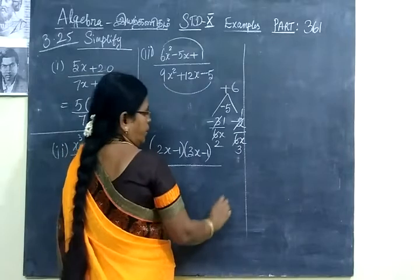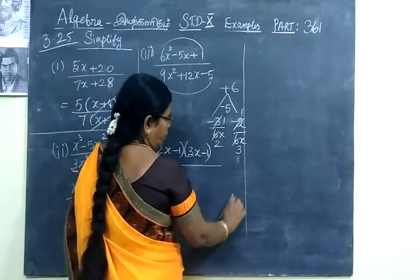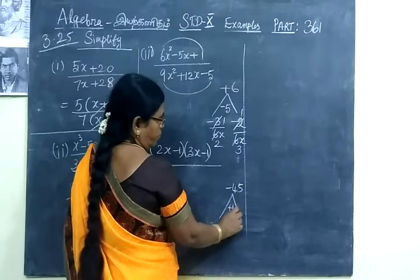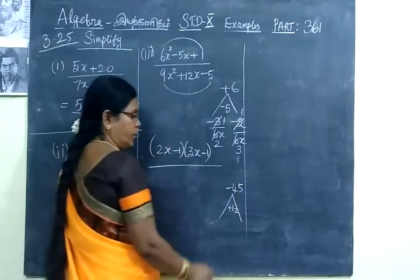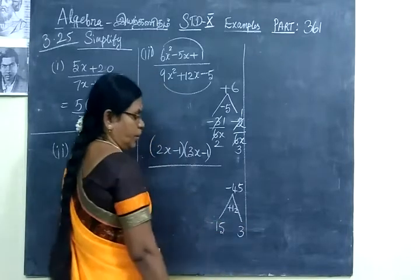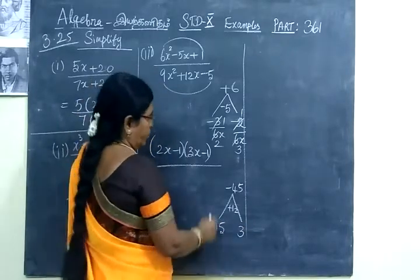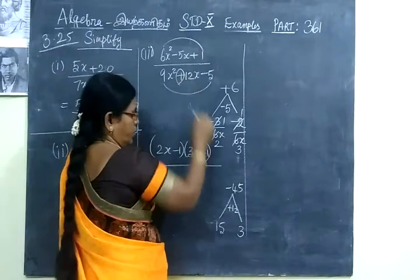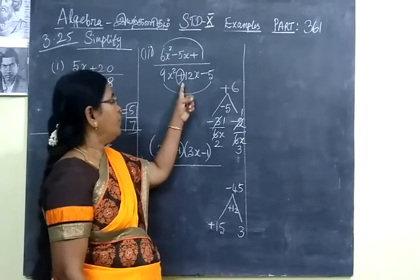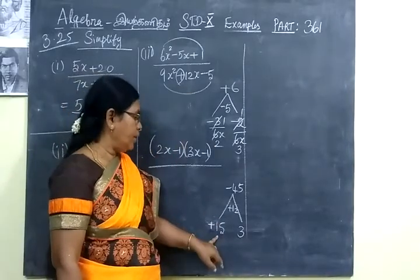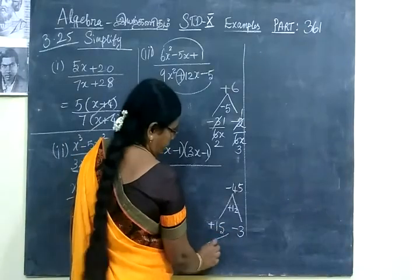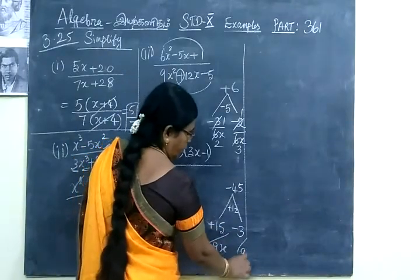Now come to the denominator. If you multiply you should get minus 45, then you get plus 12x. So for this you can take 5 and 3. 15 into 3 is 45. So in the middle term size it should be for greater number. In the previous class we told, the middle term size should be for greater number. So plus into minus, minus, by 9x. Here also 9x.